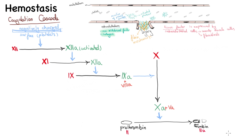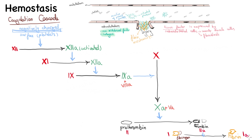The last step leads to the production of fibrin. Fibrinogen — the precursor form — must have a part cleaved off to become active fibrin. This reaction is activated by thrombin, also known as coagulation factor 2a. Fibrinogen is also called coagulation factor 1, which makes fibrin coagulation factor 1a.